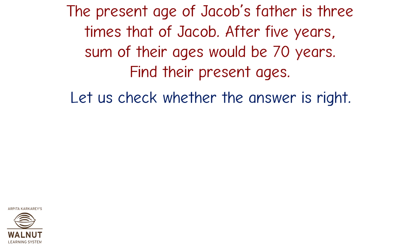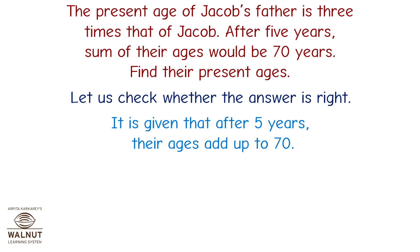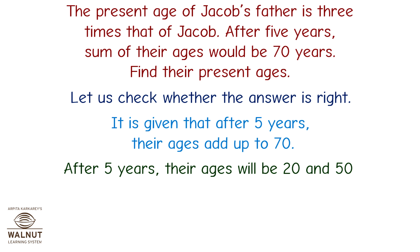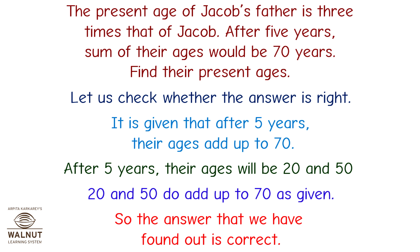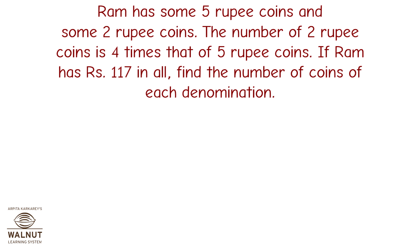Let us check whether the answer is right. It is given that after five years their ages add up to 70. After five years their ages will be 20 and 50. 20 and 50 do add up to 70, so the answer is correct.